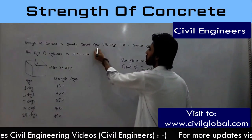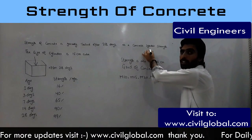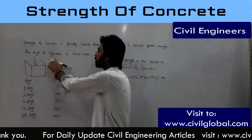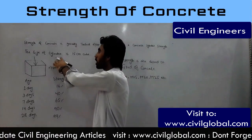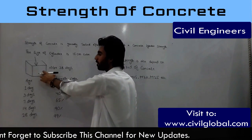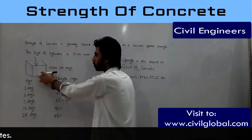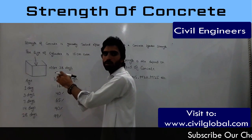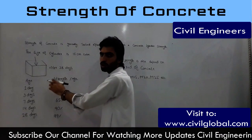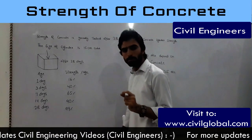Strength of concrete is generally tested after 28 days. The test is done on a concrete cylinder or concrete cube. The size of the sample must be 15 centimeter cube — this is the sample of concrete. You can also take a 15 centimeter cylinder; both are acceptable.